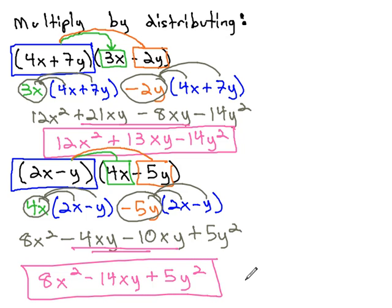The idea of multiplying by distributing is we take that first polynomial and distribute it onto each term in the second polynomial. Then, when we distribute again, we can combine like terms and arrive at our final solution.